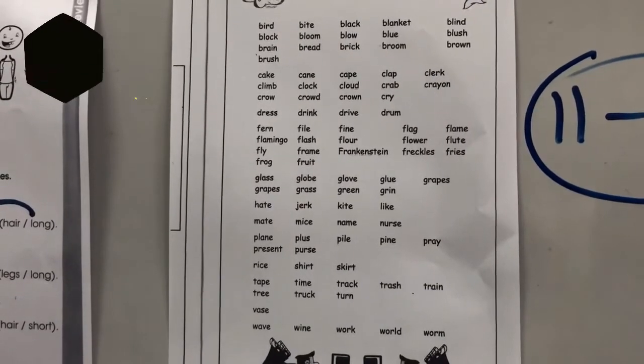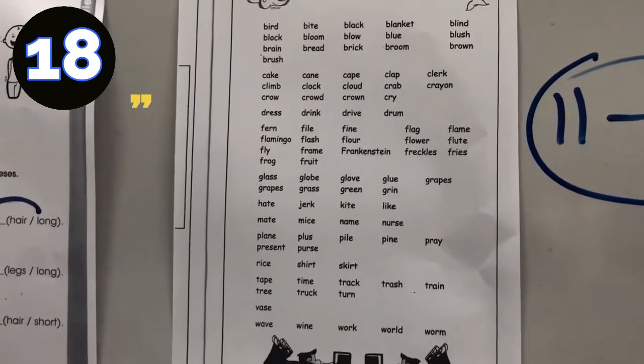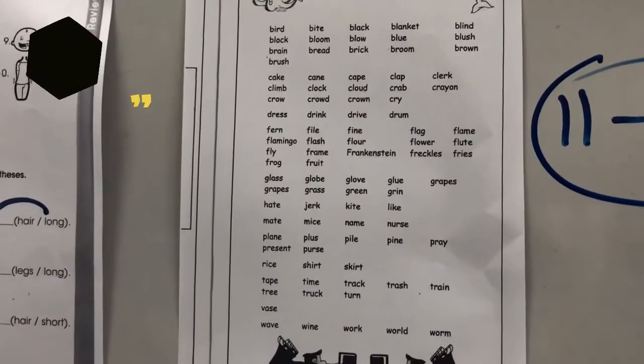Number 18. A big black bird. Crow. Crow. A big black bird. Number 18, crow.